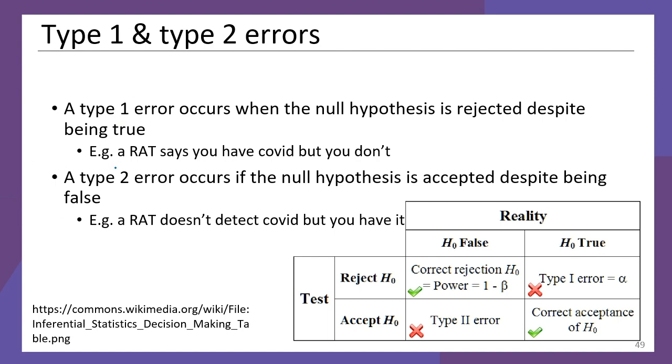While they're not perfect, there's a very skewed asymmetry where if the RAT says you've got COVID, you probably do. If it says you don't, you might anyway because the type 2 error is much more common. You can see that in this table where we reject the null hypothesis but the null hypothesis was true—that's a type 1 error, and you can see this alpha symbol (α), which we'll talk a little bit more about.